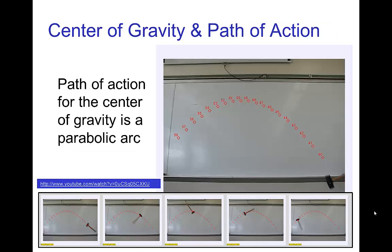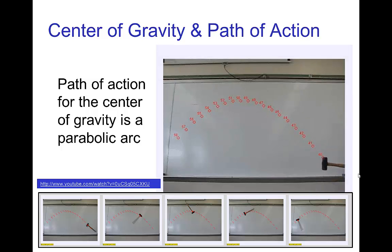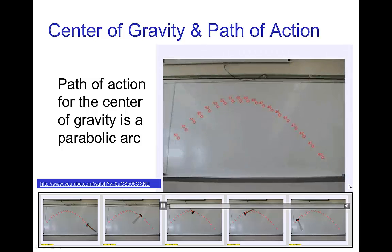One of the things which is fundamental in a successful jump is having a good path of action. For something like an inanimate object like this hammer, we know that the path of action for the center of gravity is a parabolic arc. So we see that in these frames of the hammer as it's flying through the air.